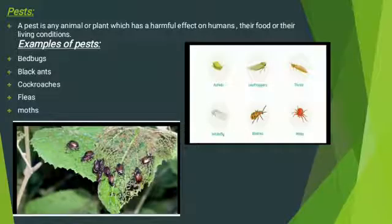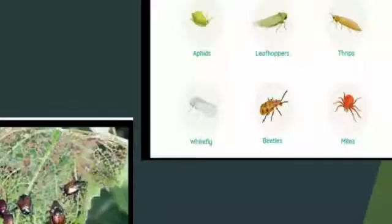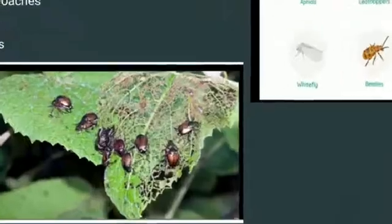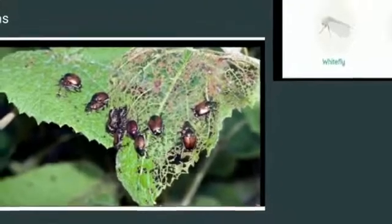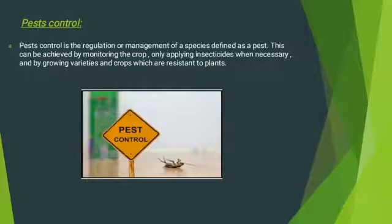A pest is any animal or plant which has a harmful effect on humans, their food, or their living conditions. Some examples of pests are leafhoppers, thrips, mites, and beetles. When these pests attack a field, they destroy all parts of it. A picture of a pest-affected destroyed leaf is shown here.